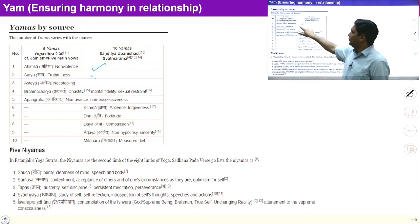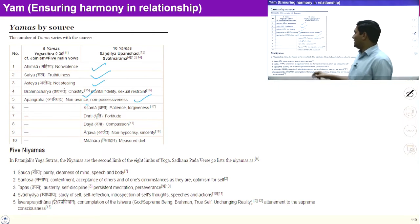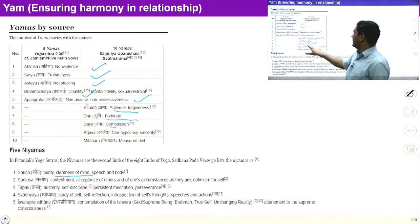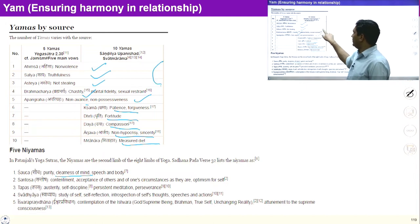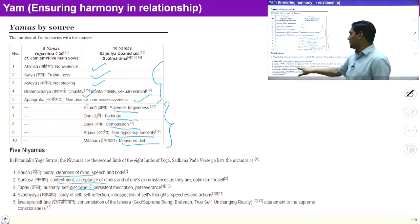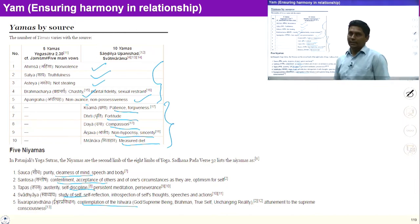Non-violence, truthfulness, non-stealing, chastity, and non-possessiveness — these five have been termed as Yam. Along with these we will discuss five more principles: purity, patience, fortitude, compassion, non-hypocrisy, and measured diet. So we are going to study ten principles under Yam. Then we will discuss Niyams: cleanliness of mind, contentment, self-discipline, study of self, and contemplation of Ishwar. By studying these two in detail, we will be able to live in harmony within myself and in relationship.